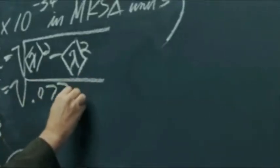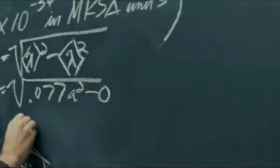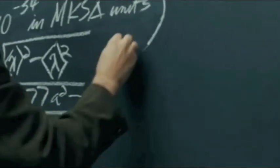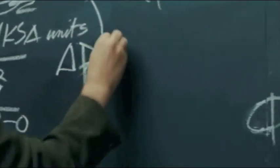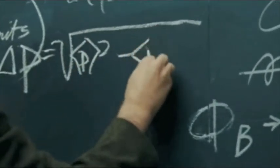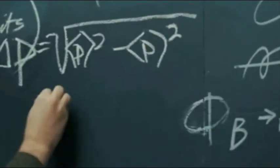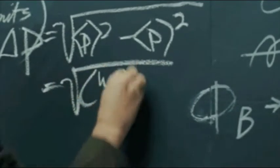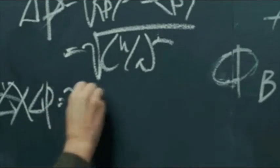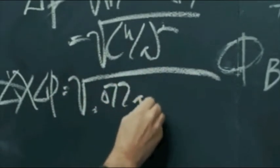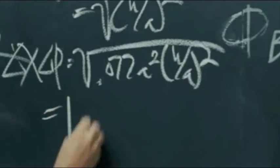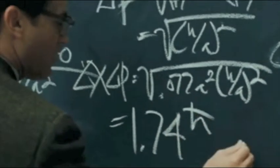So that delta x equals the square root of 0.077a squared minus 0, from which we derive the square root of 0.077a squared. And also, the uncertainty in p is equal to the square root of bracket p squared minus bracket p squared, which also equals the square root of h over a squared, which lets us delta x, delta p equals the square root of 0.077a squared, h over a squared, and 1.74 h bar.